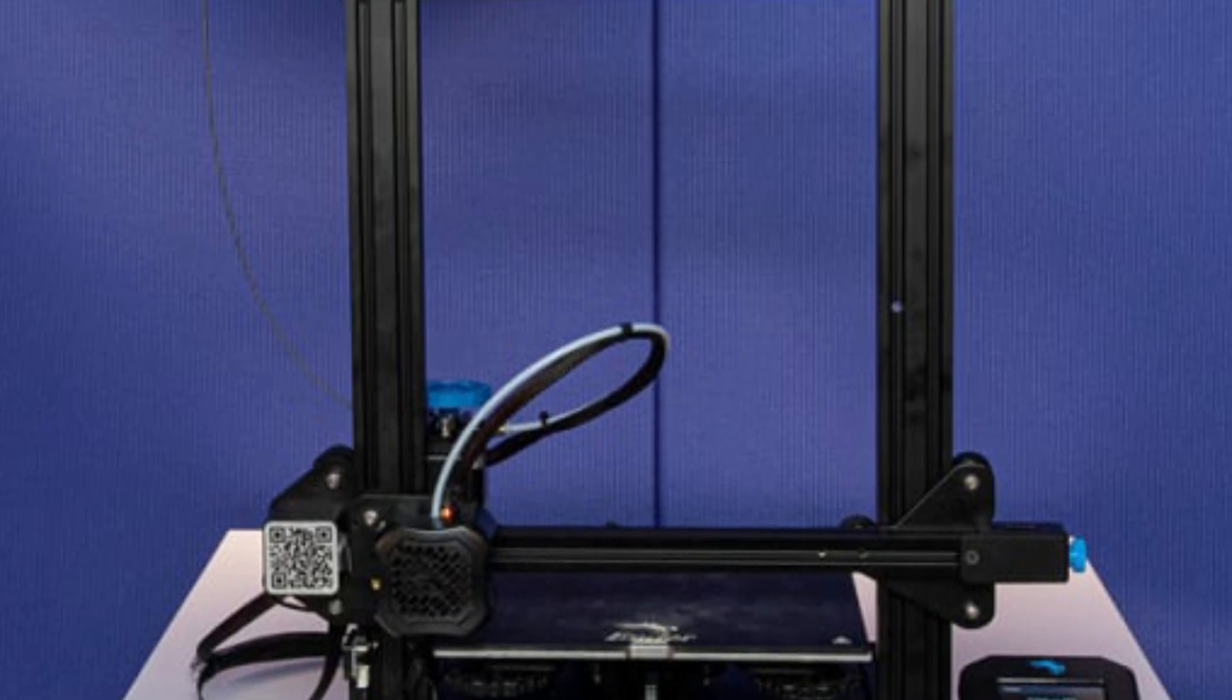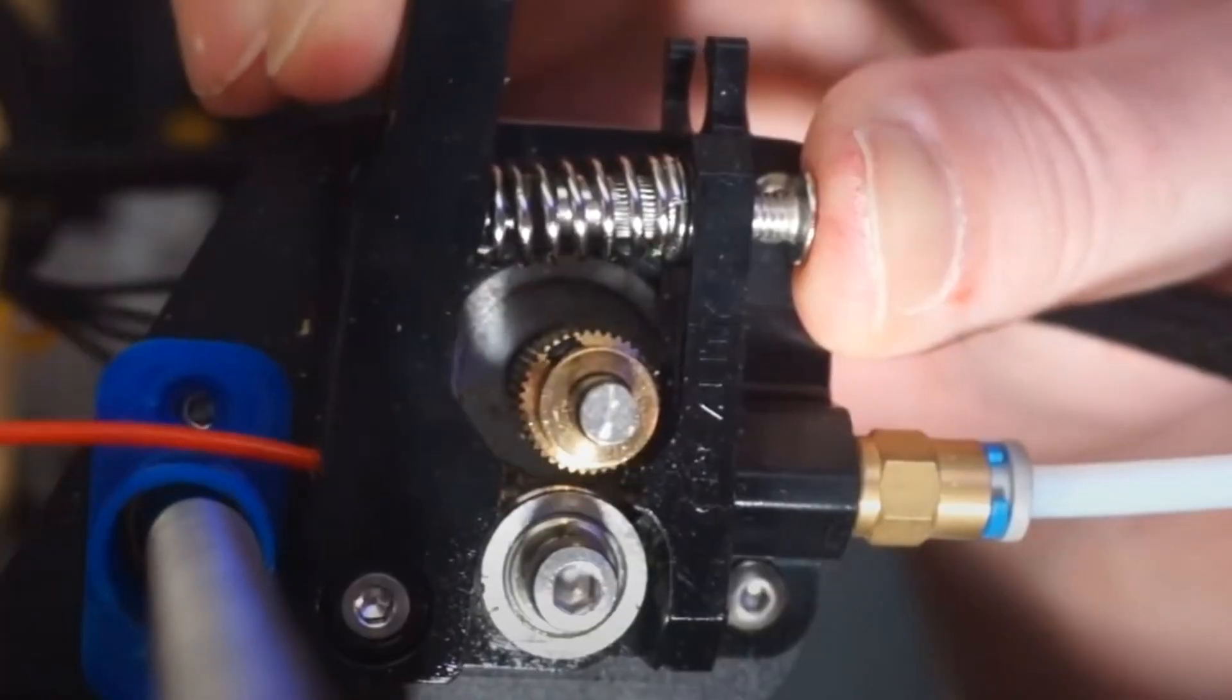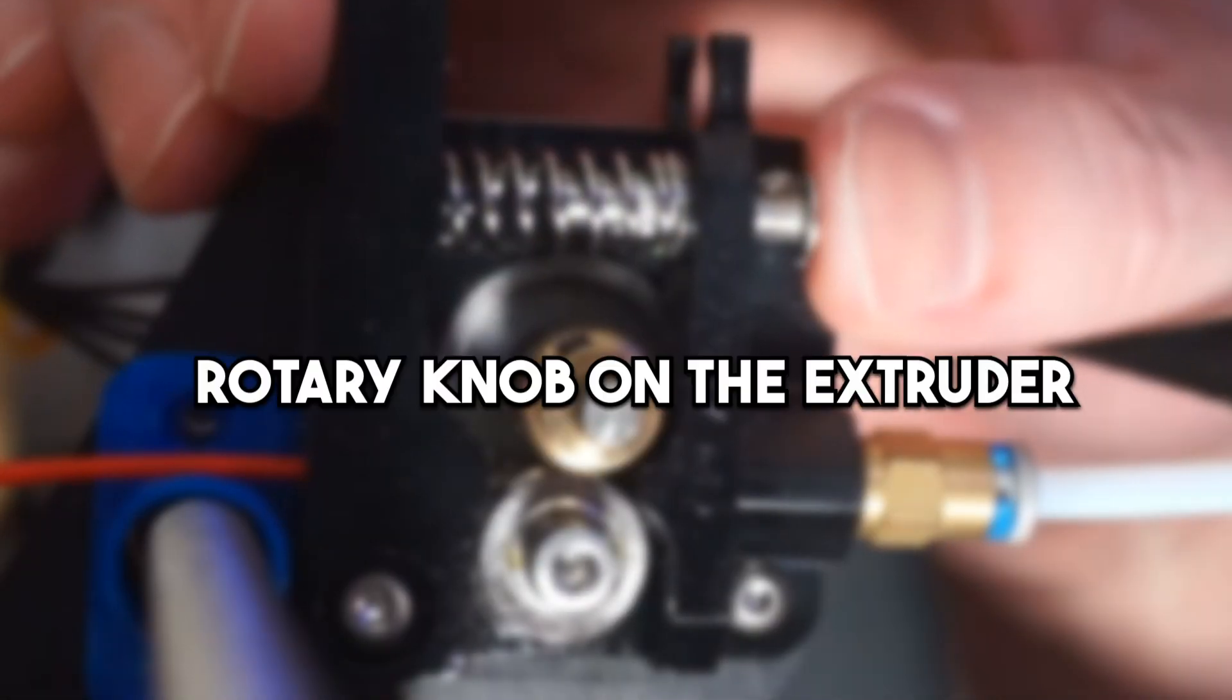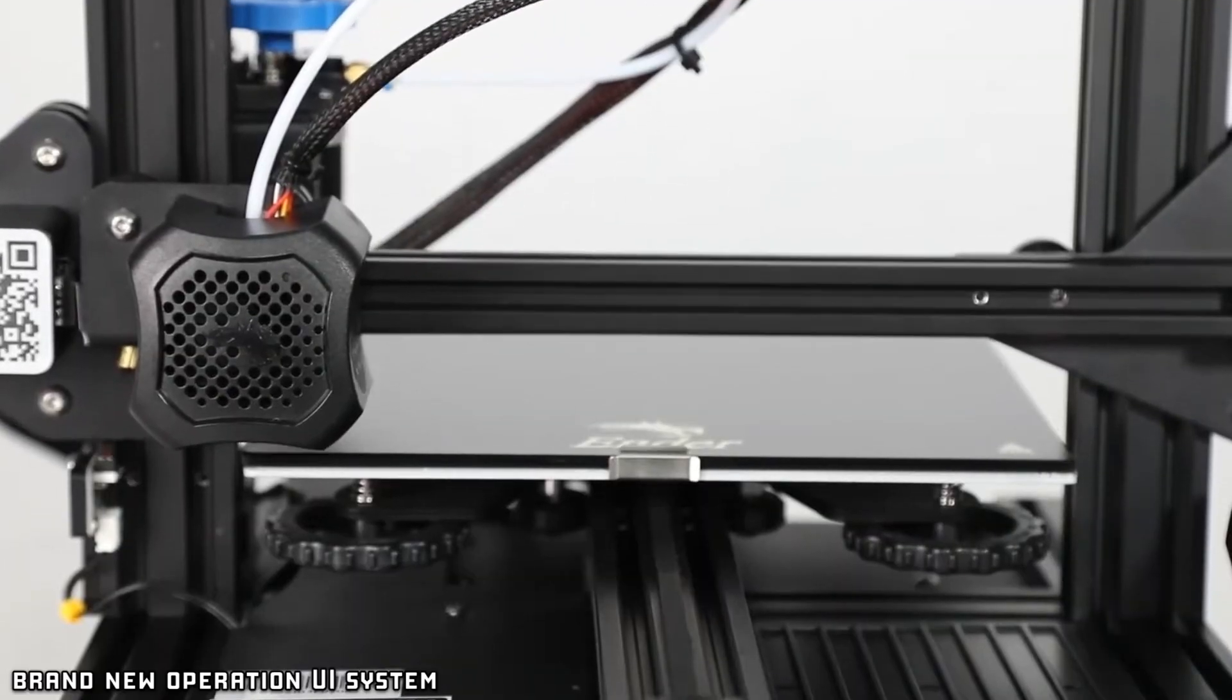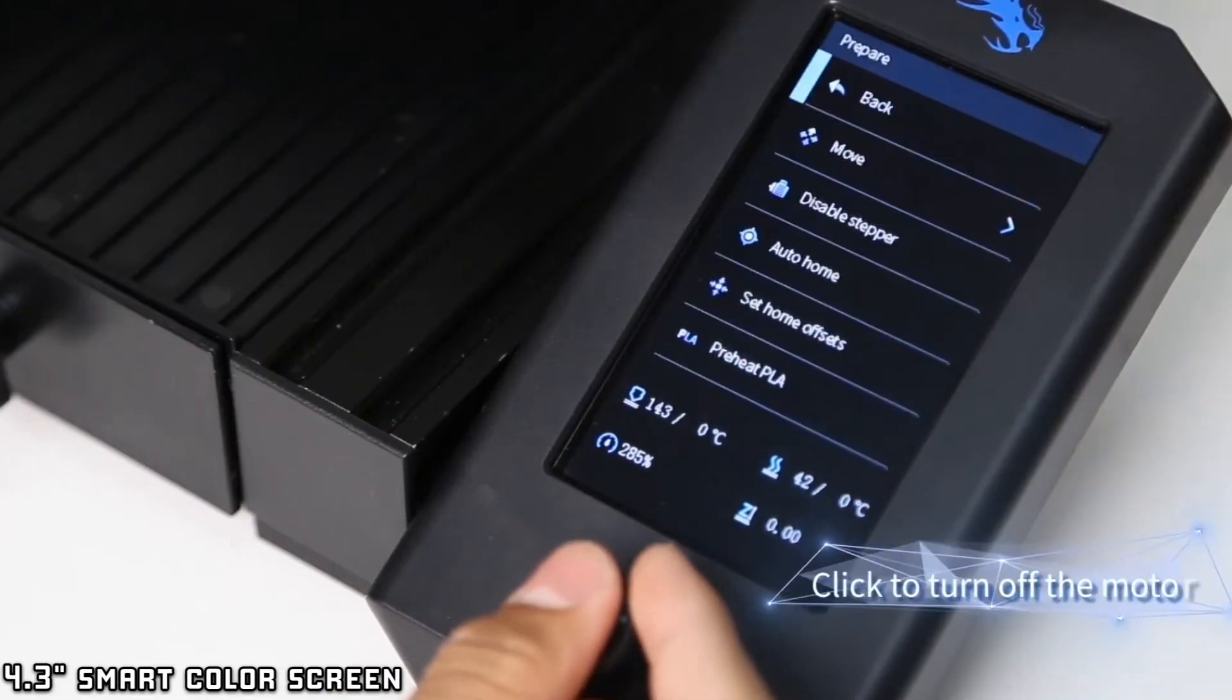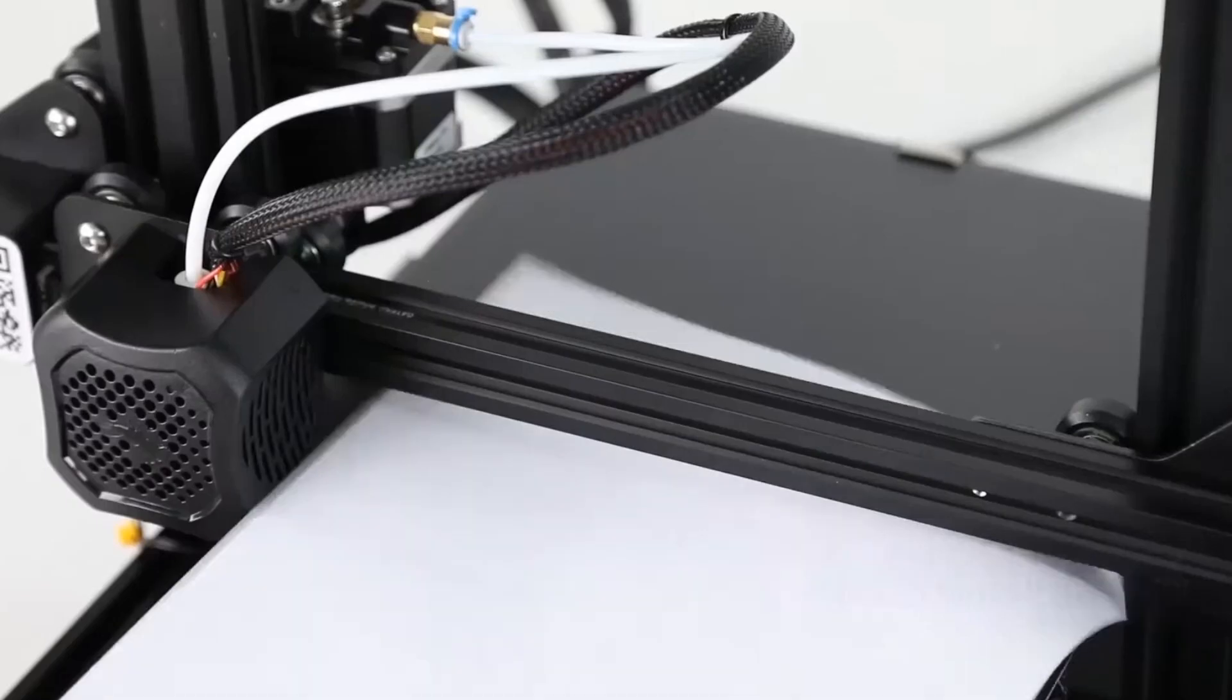One of the standout features is the effortless filament feed-in. The Ender 3v2 adds a rotary knob on the extruder, making loading and feeding filament much easier. The brand-new operation UI system and 4.3-inch smart color screen greatly improve user experience.